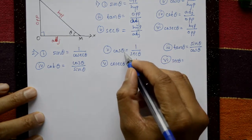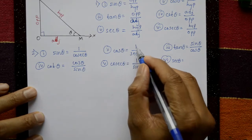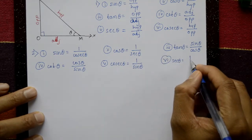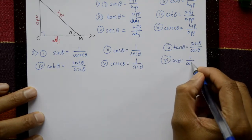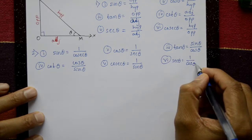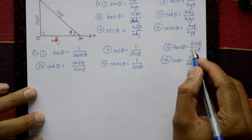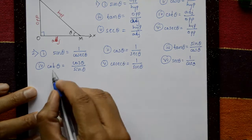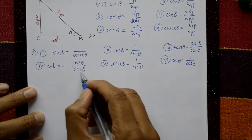Cos theta is equal to one by secant theta, and secant theta is equal to one by cos theta. Tan theta is equal to sin by cos, and cot theta is equal to cos by sin.